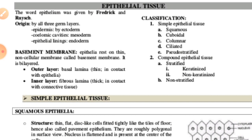Simple epithelial tissues are classified into different categories: squamous, cuboidal, columnar, ciliated, and pseudostratified epithelial tissues. Simple epithelial tissues are made up of a single layer of compactly arranged cells resting over a non-cellular basement membrane. They occur over moist surfaces where little wear and tear occurs by friction. These tissues are helpful for absorption, secretion, diffusion, and movement of materials.